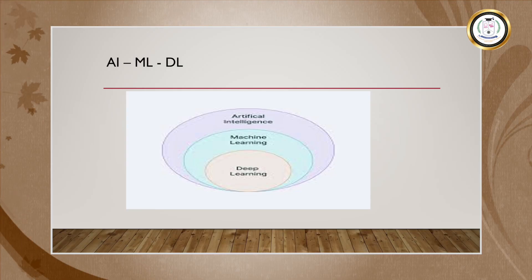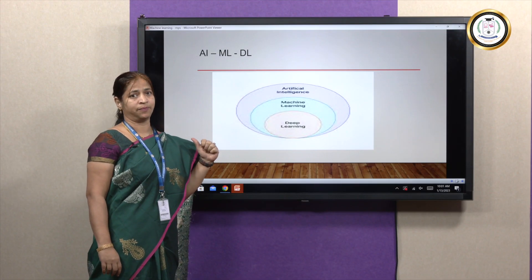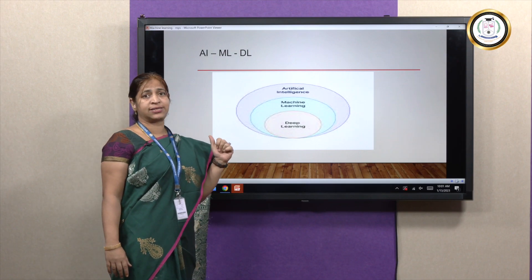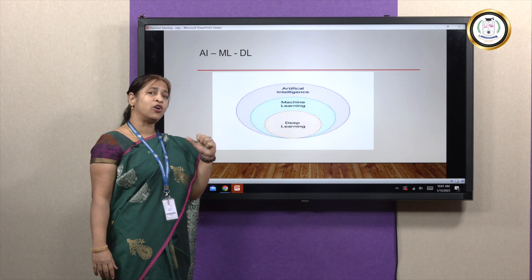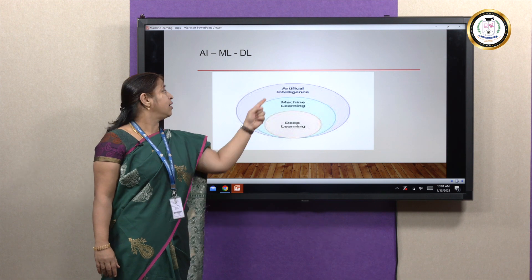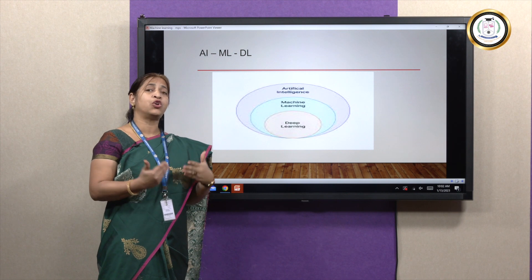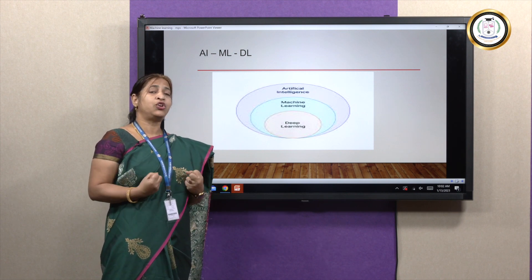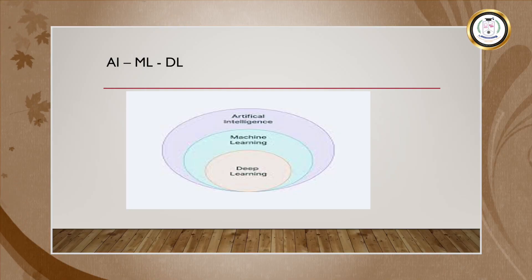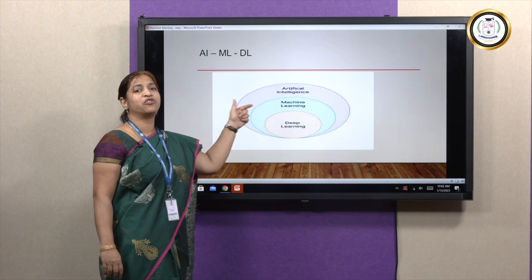Let us see the relationship between these three domains: artificial intelligence, machine learning, and deep learning — they are trendy domains nowadays. In fact, in 1956, at a conference called the AI conference, a popular scientist known as John McCarthy coined the term artificial intelligence. Since in those days we did not have that much data, it did not boom as it has now. Artificial intelligence is the whole domain, machine learning is a subset of it, and deep learning is a subset of machine learning.